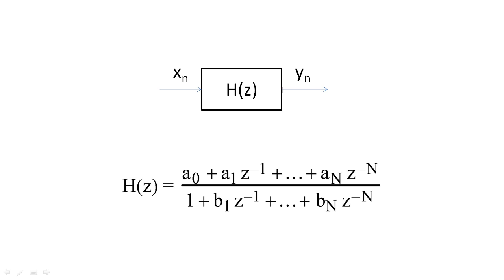Digital filters can typically be represented as a ratio of polynomials. Here, capital N corresponds to the number of delays in the system, and capital N is called the order of the filter. So, a filter with two delays is called a second-order filter.